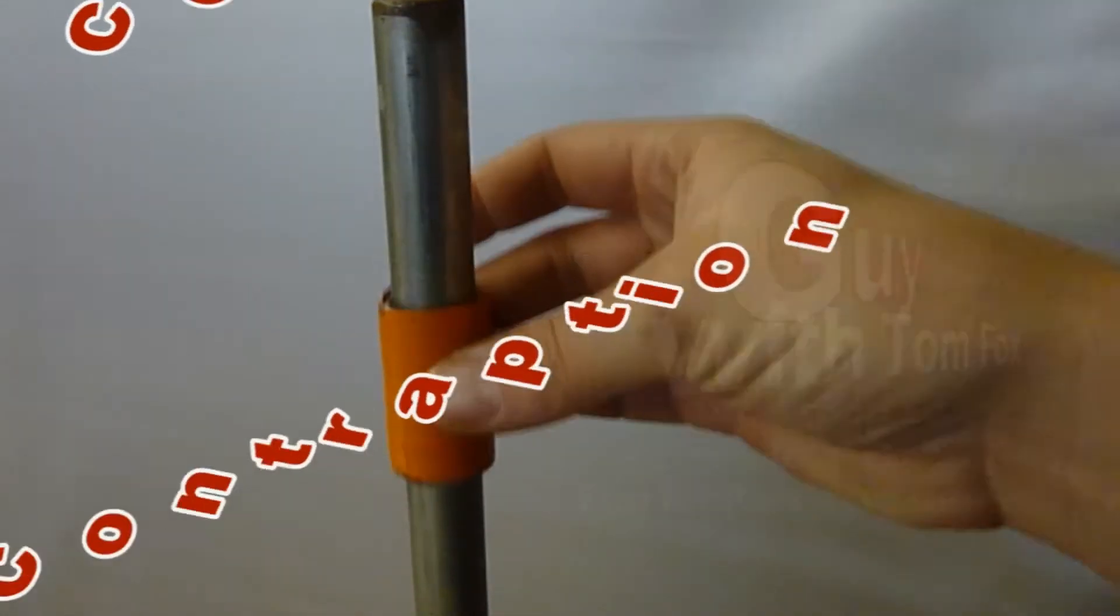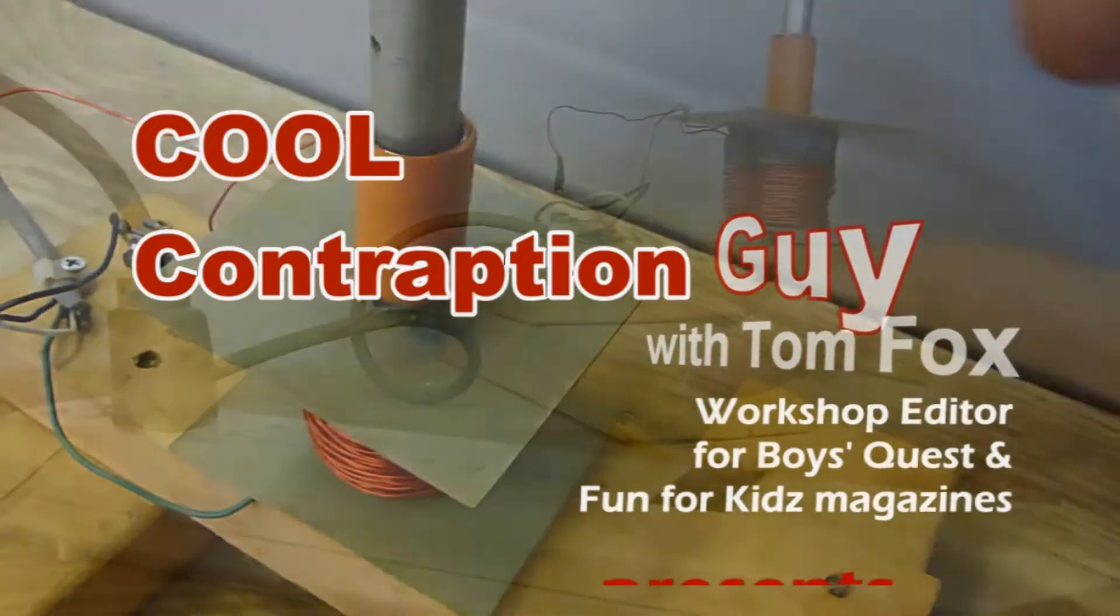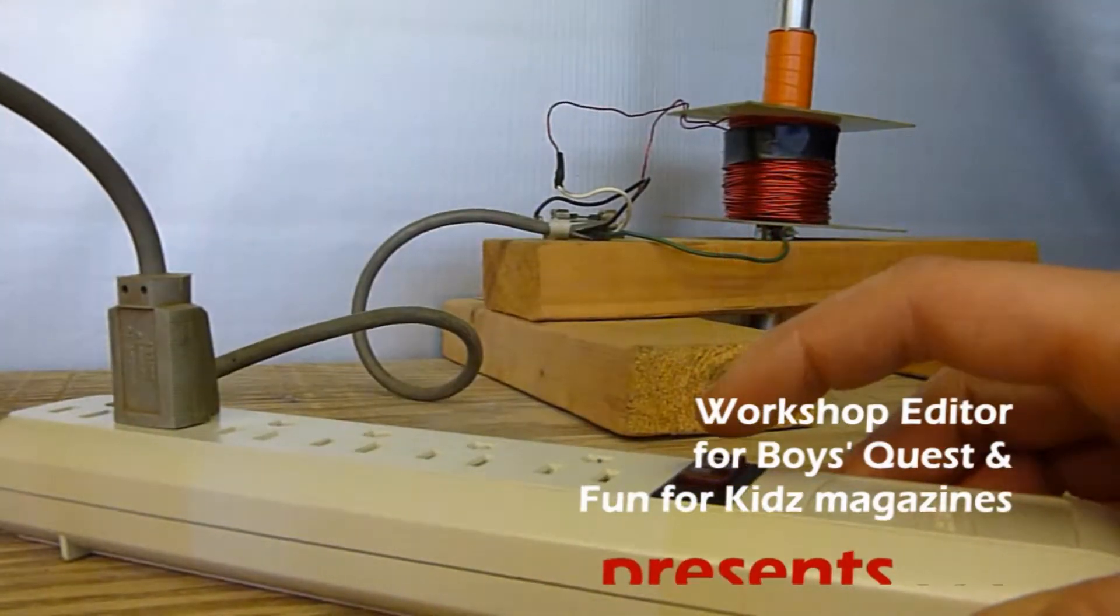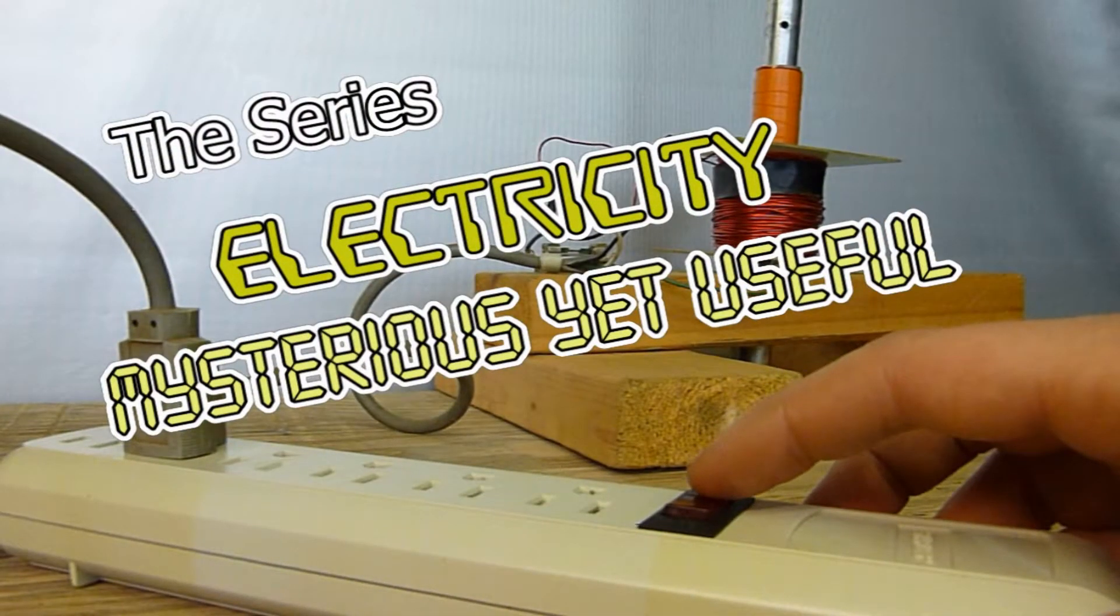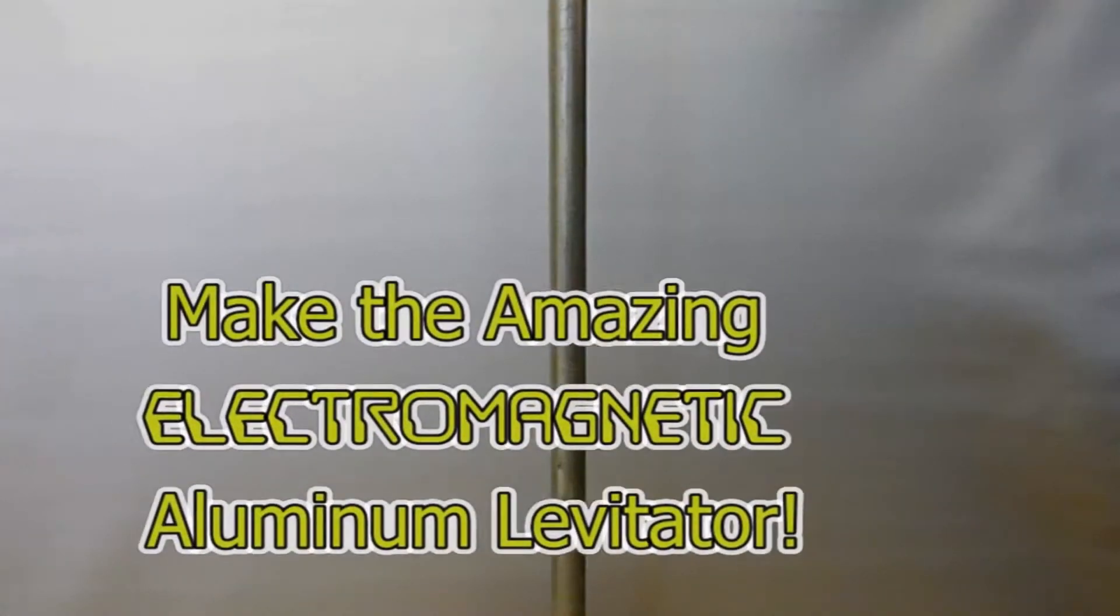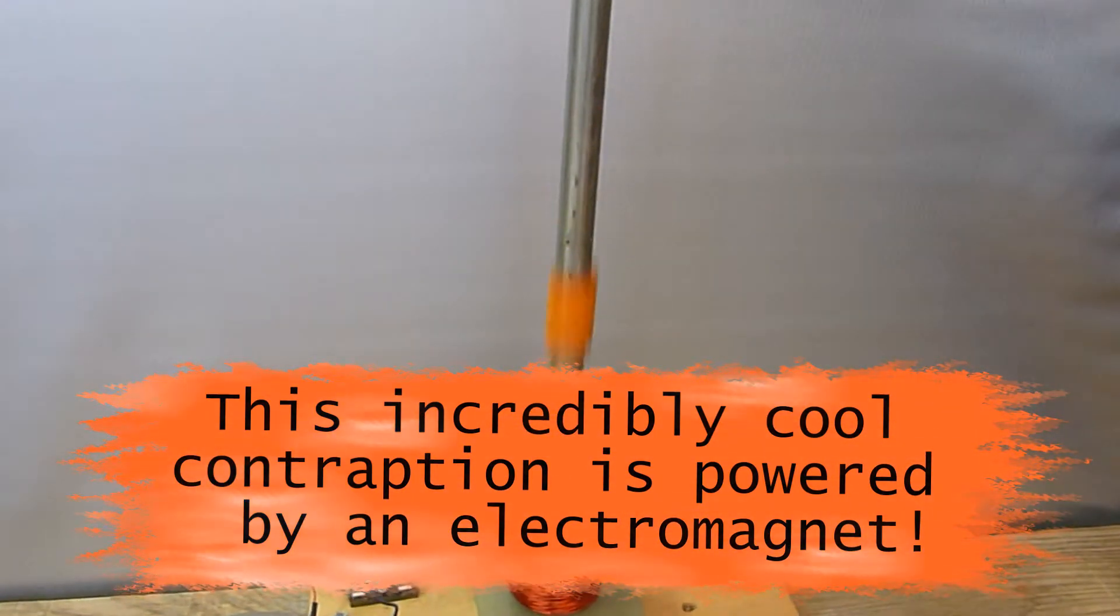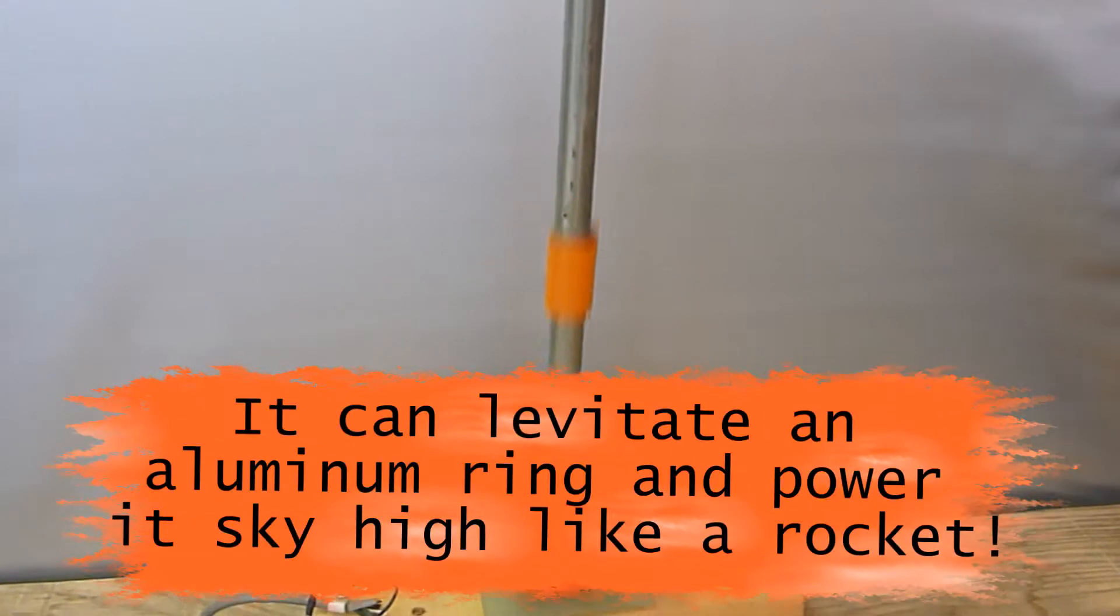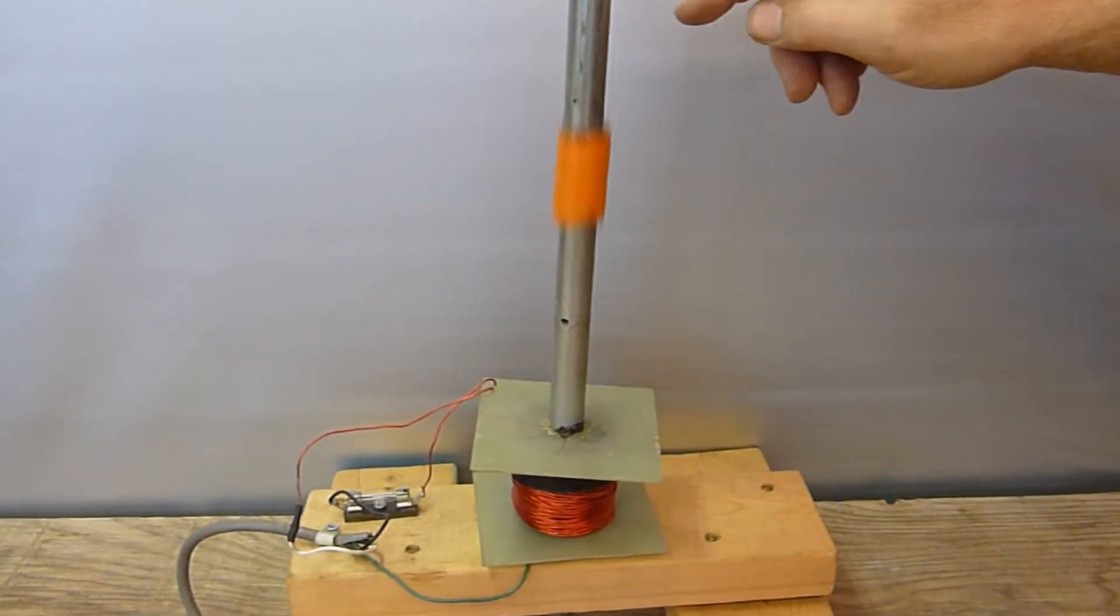Cool Contraption Guide with Tom Fox, workshop editor for Boyz Quest and Funny for Jits magazines, presents the series Electricity is serious yet useful. Make the amazing electromagnetic aluminum levitator. This incredibly cool contraption is powered by an electromagnet. It can levitate an aluminum ring and power it sky high like a rocket.